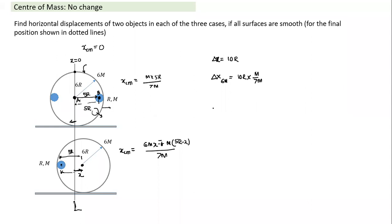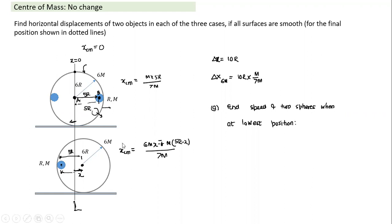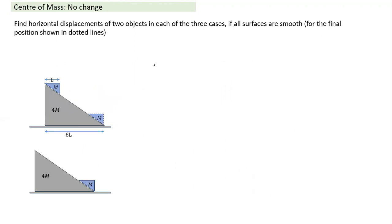One more question you can try: find the speed of the two spheres when the smaller sphere is at the lowest position. Think about how the lowest-point configuration looks — the smallest sphere is at the bottom of the shell. You can try and solve that part as well, and similarly solve other related questions.